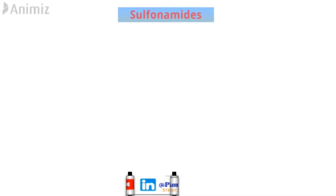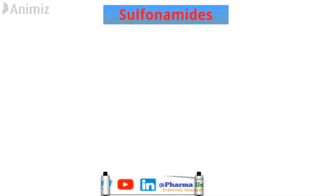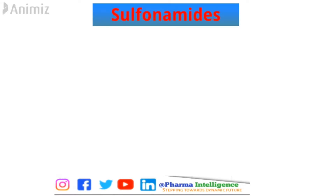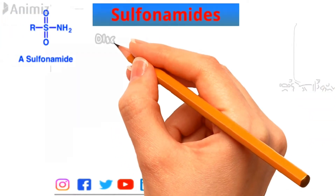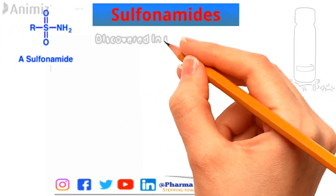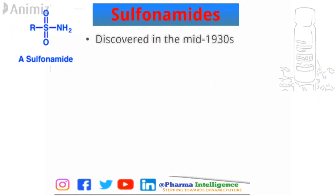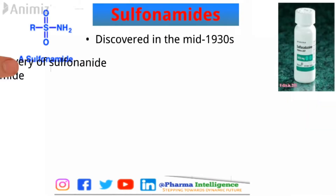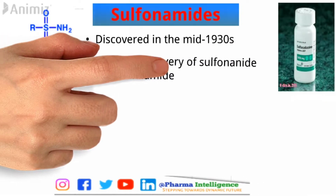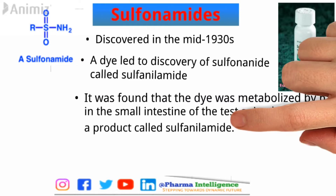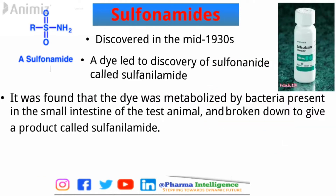Hello guys, welcome to Pharma Intelligence. Today we will learn about sulfonamides. Sulfonamides were discovered in the mid-1930s. The sulfonamide story began in 1935 when it was discovered that a red dye called Prontosil had antibacterial properties.